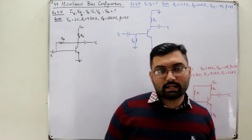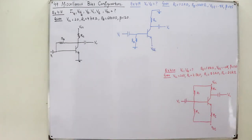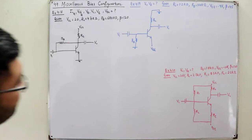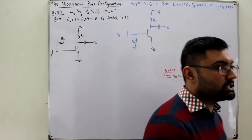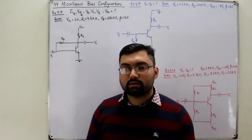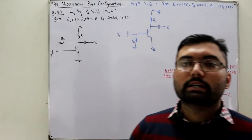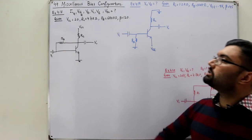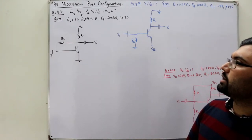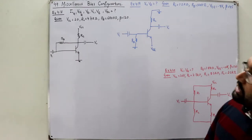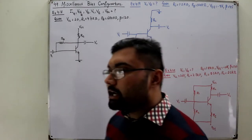Bismillahirrahmanirrahim. Assalamu alaikum. Salar Khan here, and today we have some examples on the bias configurations of a BJT. The topic is by the name miscellaneous bias configurations.